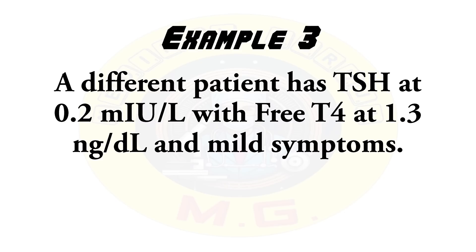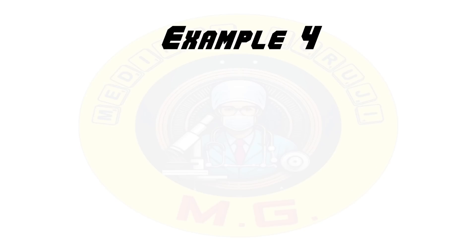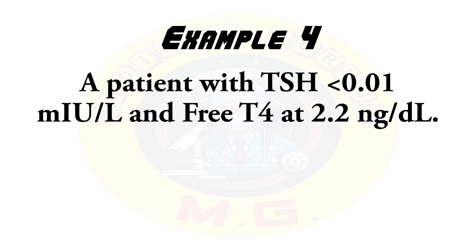Third example: a patient having TSH 0.2 with free T4 at 1.3 nanogram per deciliter and mild symptoms. This suggests low TSH and normal T4, which is a case of subclinical hyperthyroidism. Observation and periodic re-evaluation should be advised to the patient.